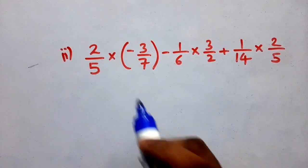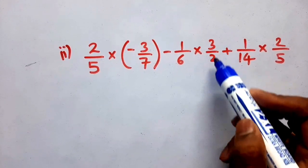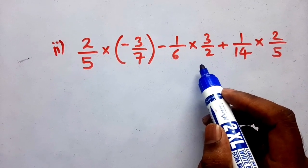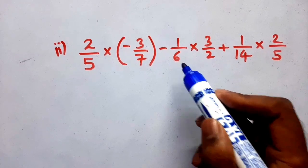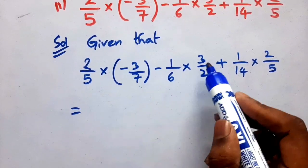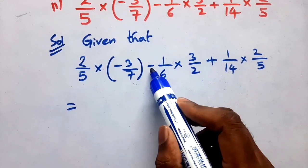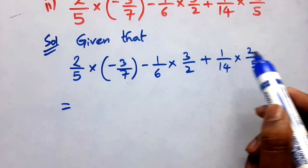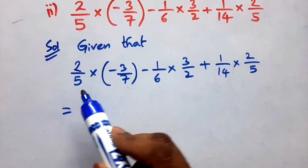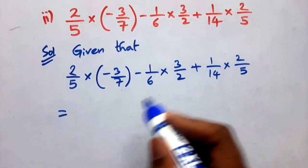See the next problem: 2 by 5 into bracket minus 3 by 7, minus 1 by 6 into 3 by 2, plus 1 by 14 into 2 by 5. This one we also solve using properties. First write the given values, then observe each term. This is the first term, this is the second term, this is the third term. Here 2 by 5 is common in the first and third terms.